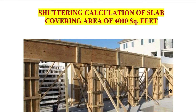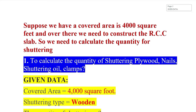Bismillahirrahmanirrahim. Welcome to the Quantity Survey course. This is our 26th lecture. In this lecture we have the topic: shuttering calculation of slab covering an area of 4000 square feet. We have two methods to calculate the shuttering. The first method is exact calculation by calculating the area of the shuttering required. The other method is the thumb rule method, by which we can calculate the estimated shuttering near to the exact calculation.